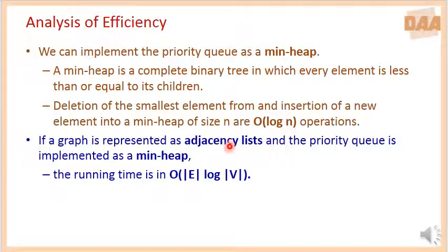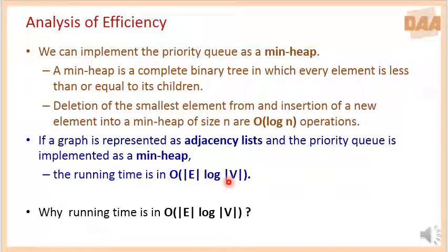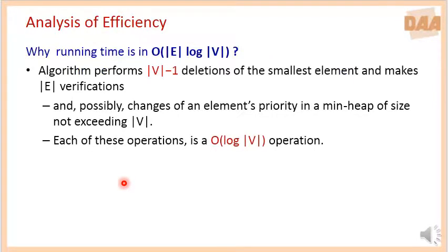Suppose the graph is represented as an adjacency list and min heap is used for the priority queue. Then the running time of Prim's algorithm will be order of total edges log total vertices. Why does this particular complexity come into picture? This is because the algorithm performs total vertices minus 1 number of deletions of the smallest element from the edge list, because all together we need to add vertices minus 1 number of edges to form the spanning tree.